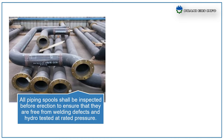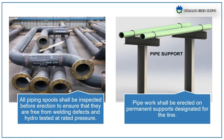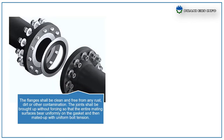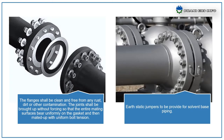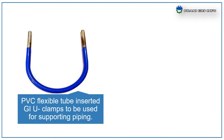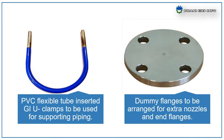All piping spools shall be inspected before erection to ensure they are free from welding defects, hydro-tested, and at the correct pressure. Pipework shall be erected on the permanent supports designated for the line. Flanges shall be clean and free from any rust, dirt, or other contamination. Joints shall be brought up without forcing so that the entire mating surfaces bear uniformly on the gasket and torqued up with uniform bolt tension. Electrostatic jumpers to be provided for solvent-based pipe. PVC flexible tube-inserted GI U-clamps to be used for supporting piping.